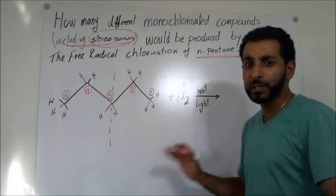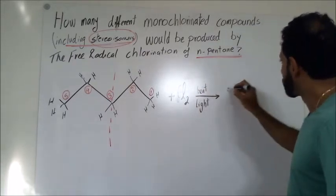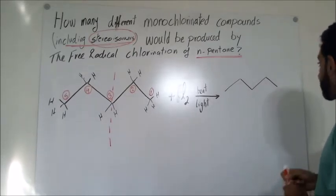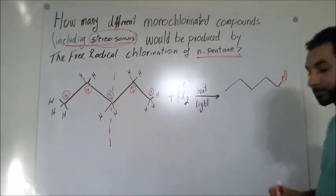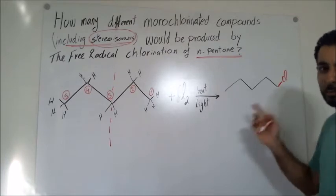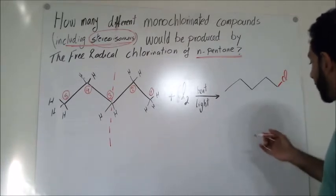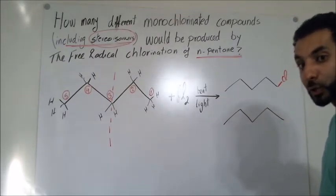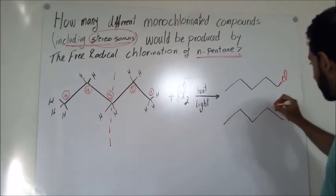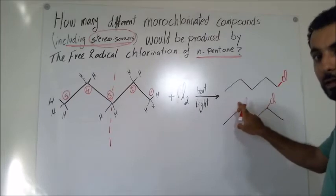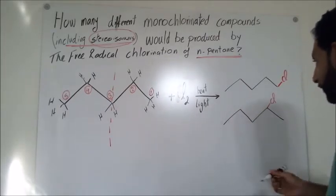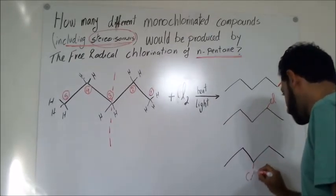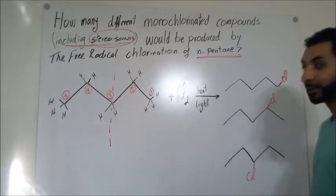Let's draw the three products. Product 1: chlorine added at carbon 1 (terminal chlorine). Product 2: chlorine added at carbon 2 or carbon 4 — these are the same product. Product 3: chlorine added at carbon 3. So we have three structural products so far.